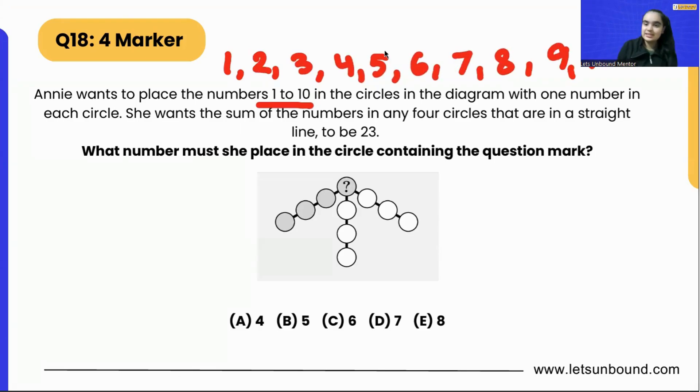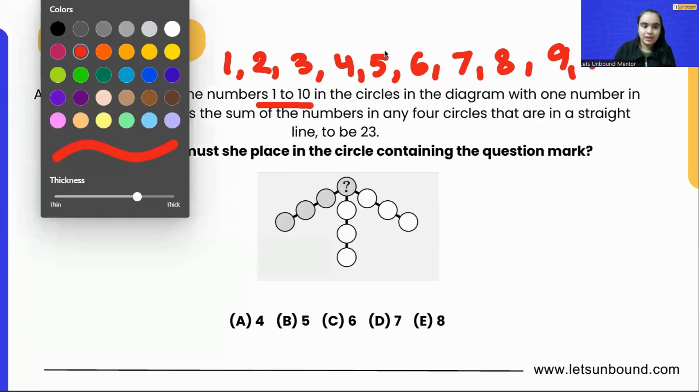So we need to place numbers 1, 2, 3, 4, 5, 6, 7, 8, 9, and 10. These 10 numbers we need to place in this grid, in each circle. In total, if you count the circles, they are 10, so one number in each circle.